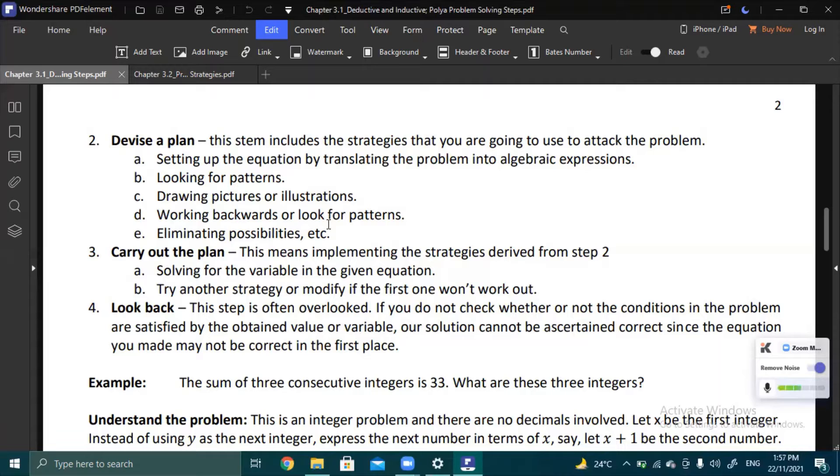We also have working backwards or look for patterns. If you can't solve it with your approach, go backwards, look for a pattern. Then, eliminating possibilities. You narrow down your options. And so on. Those are ways to deal with a word problem.